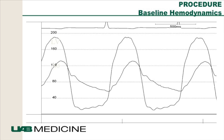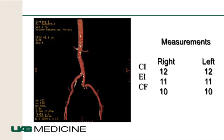His hemodynamics at cath also showed severe aortic stenosis — you can see the aortic and left ventricular waveform with a mean gradient of about 40 mmHg. These patients usually get a CT angiogram looking at their iliofemoral arteries and the position of the heart within the chest. His iliofemoral angiograms revealed large arteries of about 10 to 12 mm, which is adequate — with TAVR we want at least 7 to 8 mm in diameter.